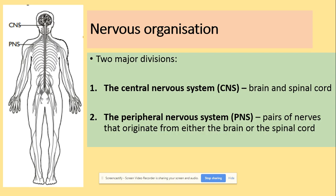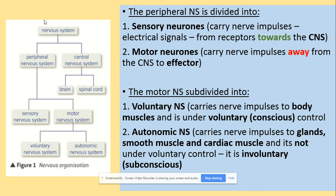In terms of the structure of the nervous system, this is divided into two parts. We've got the central nervous system, which involves the brain and spinal cord. And we've got the peripheral nervous system, which is made of pairs of nerves organized from either the brain or the spinal cord. The peripheral nervous system can then be divided into two: sensory neurons, which carry nerve impulses from receptors towards the central nervous system, and motor neurons that carry nerve impulses away from the central nervous system to an effector.